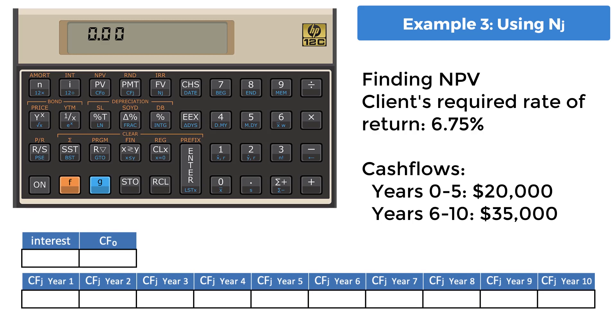Starting today, the following cash flows are needed in retirement. $20,000 for years 0-5 and $35,000 in years 6-10. Find the NPV and use the NJ key to enter these different values. Year 0 is special and this will be directly entered into CF0 as 20,000. And since this is a payout, it will be entered as a positive number.